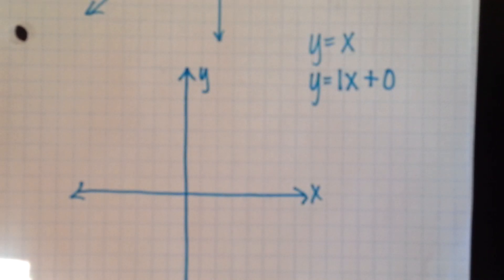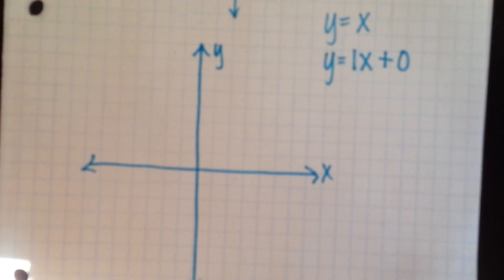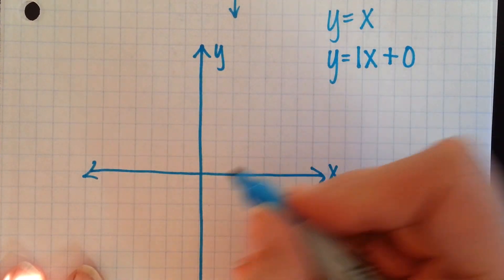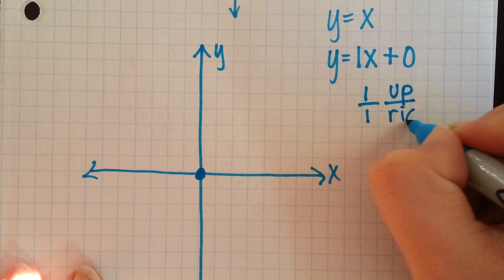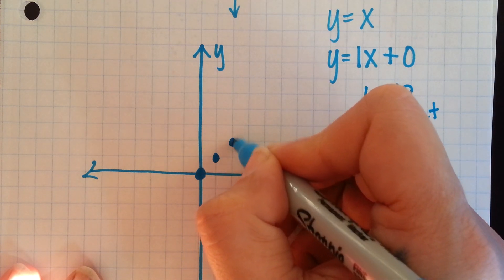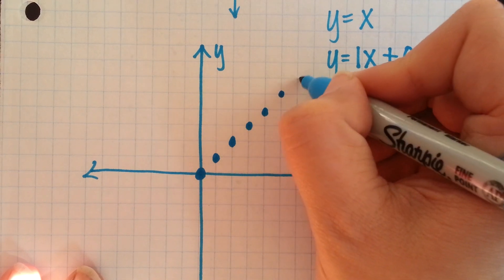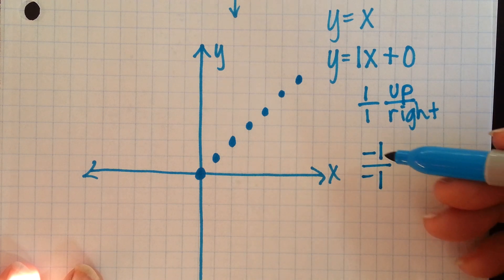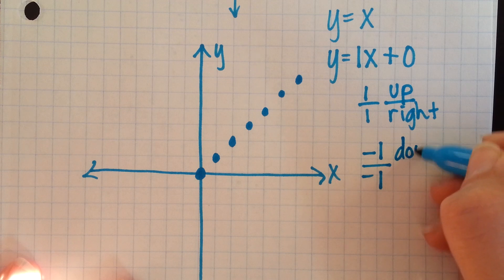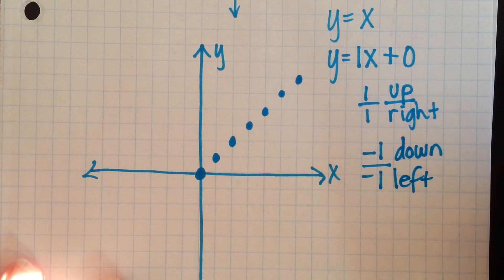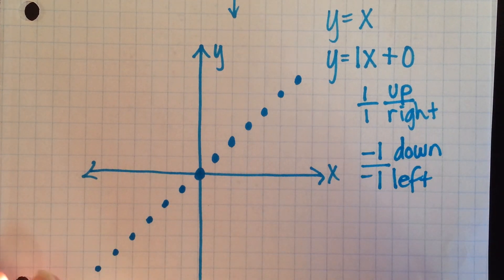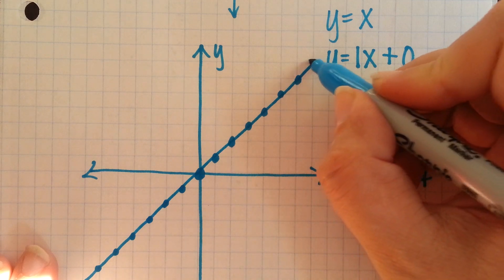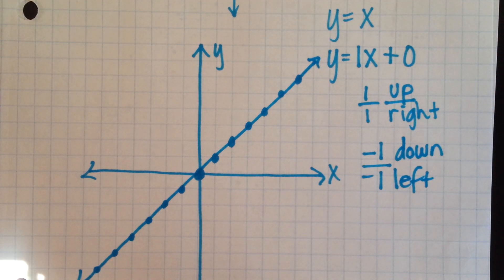If we were graphing that, we start with our coordinate plane. We have a y-intercept of 0, so we put a point at (0, 0). Our slope is 1, or 1 over 1, which tells us to go up 1 and to the right 1 — repeatedly until we reach the edge of the graph. Or we could go down 1 and to the left 1, because those negatives cancel, still making a positive slope of 1. We keep doing that, then connect our dots. That's the second way to graph the parent function for a linear function.